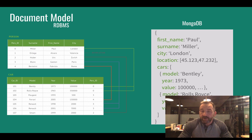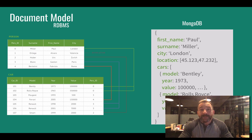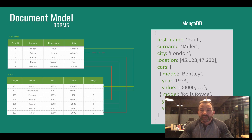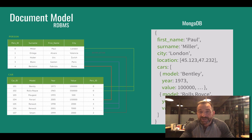Now with MongoDB, we represent relationships in a slightly different way. We embed that data. You see the very same information represented on the right that you see on the left. So Paul Miller lives in the city of London — there's his location — and all of that is represented in a JSON document.